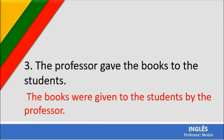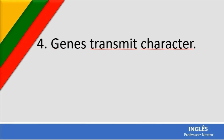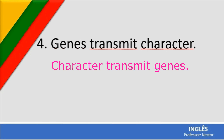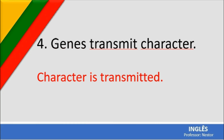Another example: 'Genes transmit characteristics' — os genes transmitem características. 'Transmit' has no 's' because 'genes' is plural. To convert to passive: 'Characteristics are transmitted' — or complete: 'Characteristics are transmitted by genes.' Always use 'to be' as the auxiliary. It's easy: 'is transmitted' or 'are transmitted' depending on the subject.